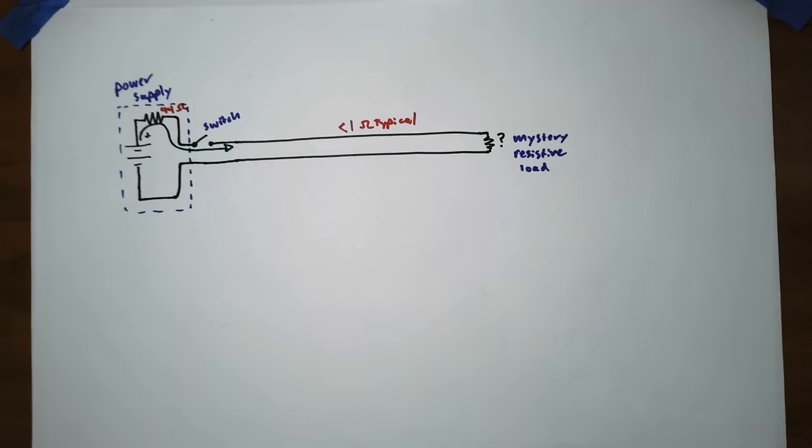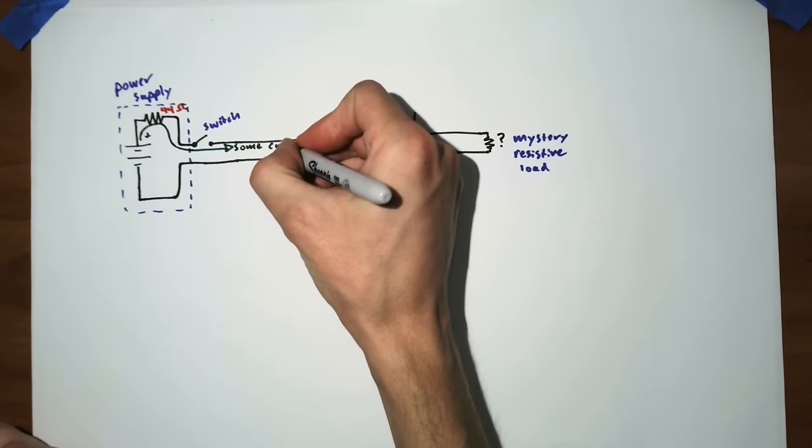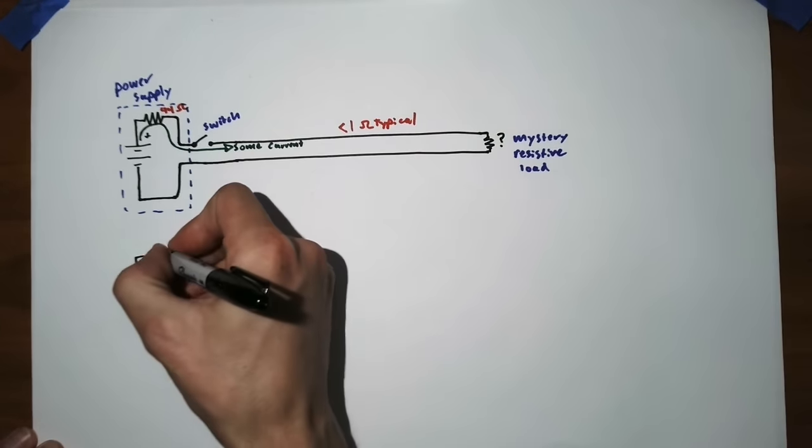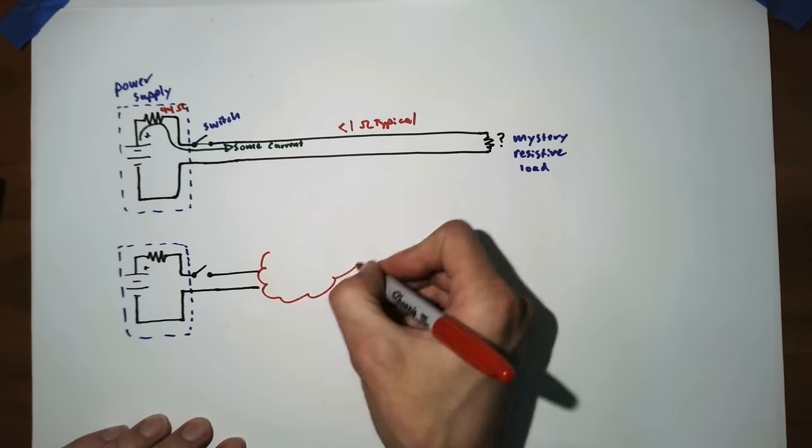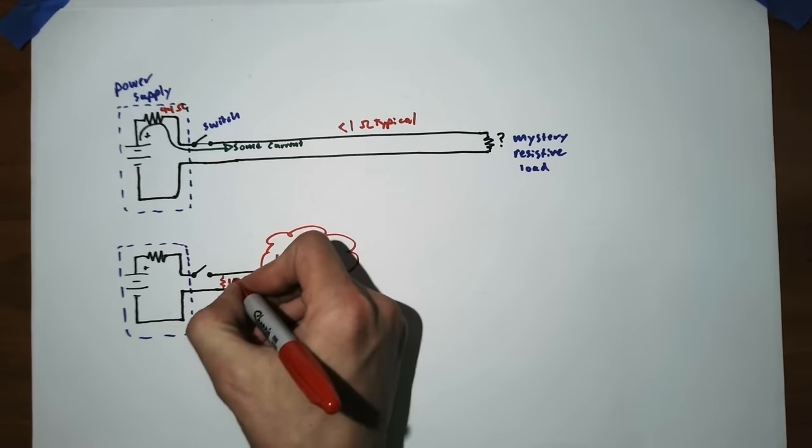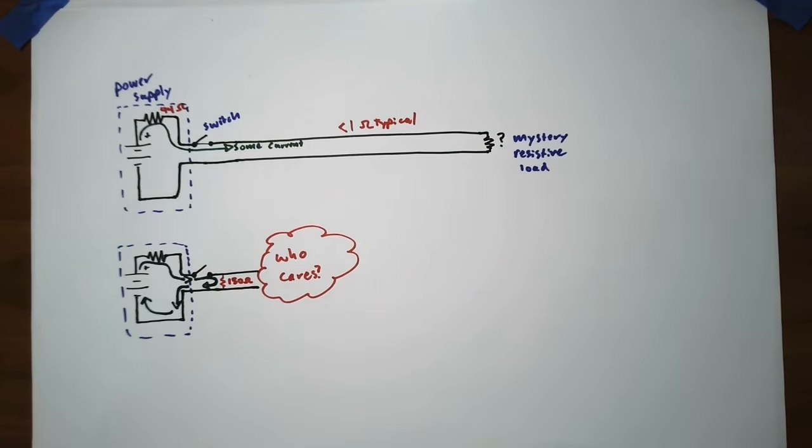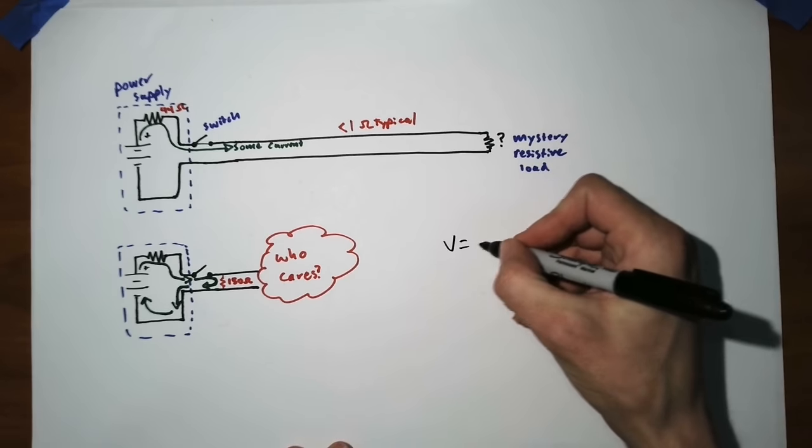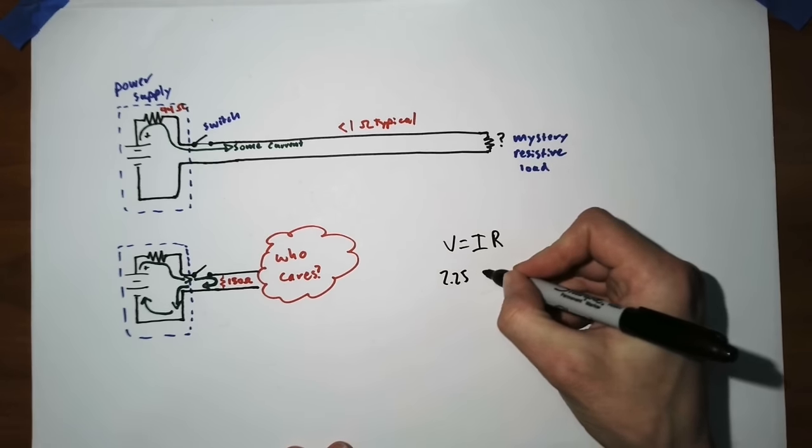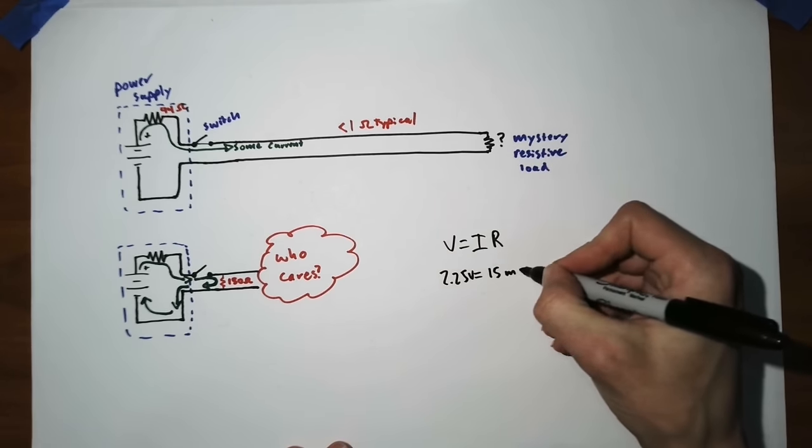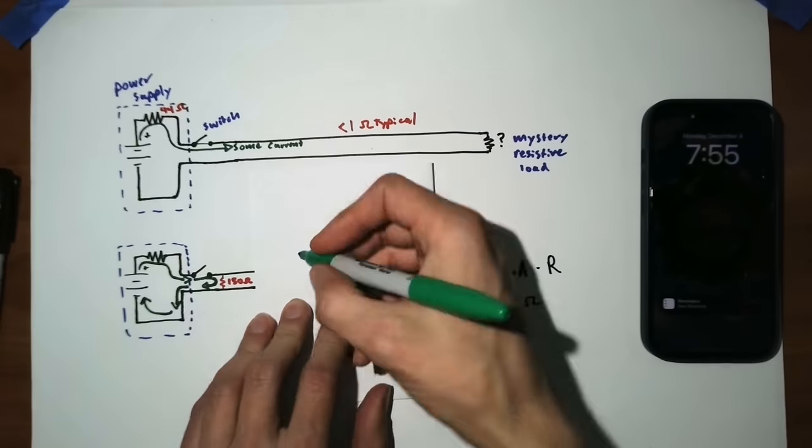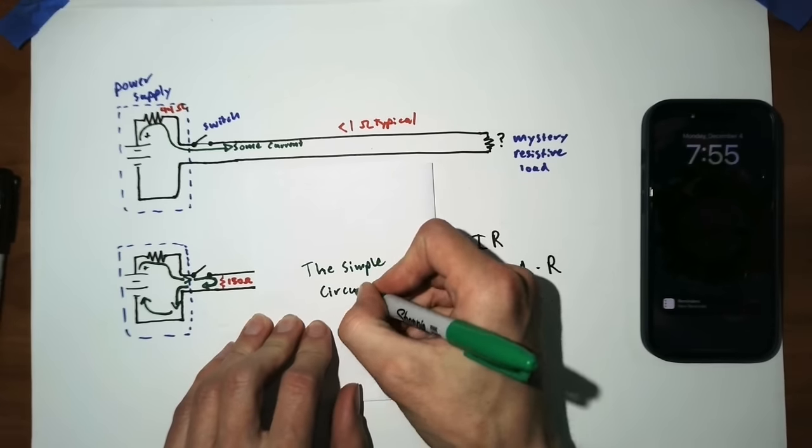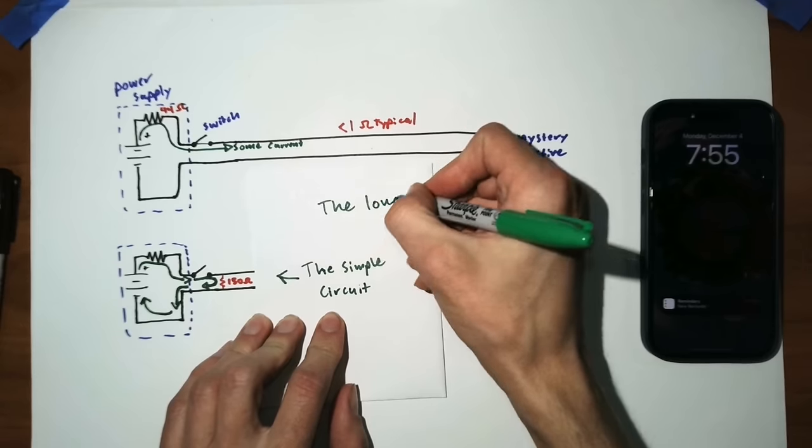The instant we flick this switch, some amount of current has to flow towards the load. And that initial current can be estimated if you remove this long transmission line and replace it with a single 150 ohm resistor. Earlier I said that in this pulse down the line, we had 2.25 volts of potential and 15 milliamps of current. That's the current and voltage we would expect to see across a 150 ohm resistor in this simpler hypothetical circuit.